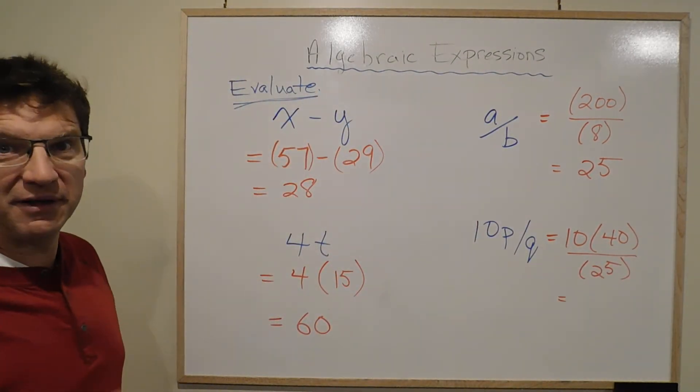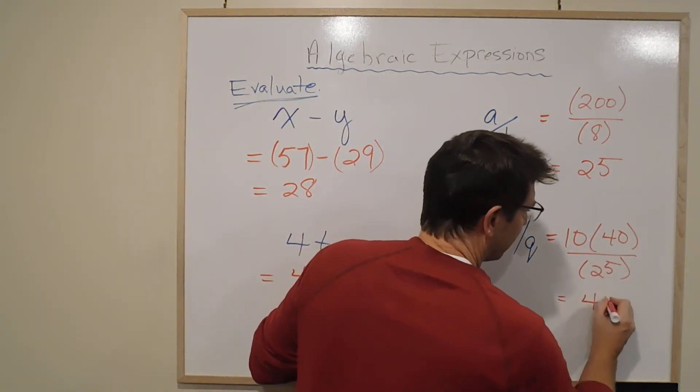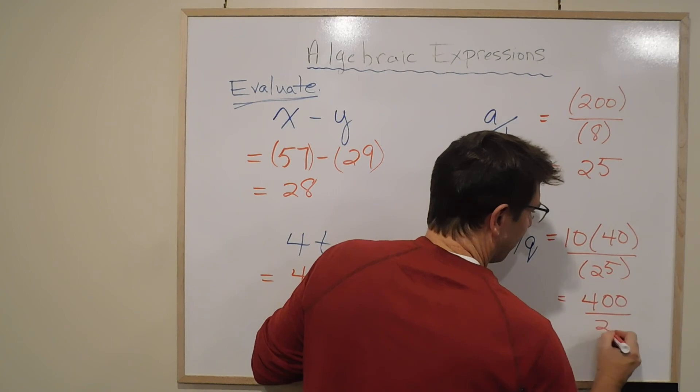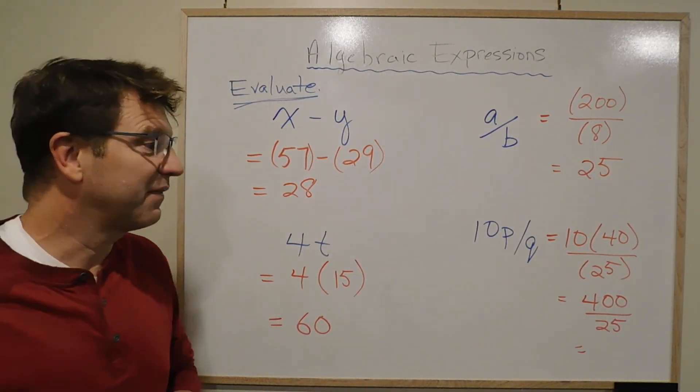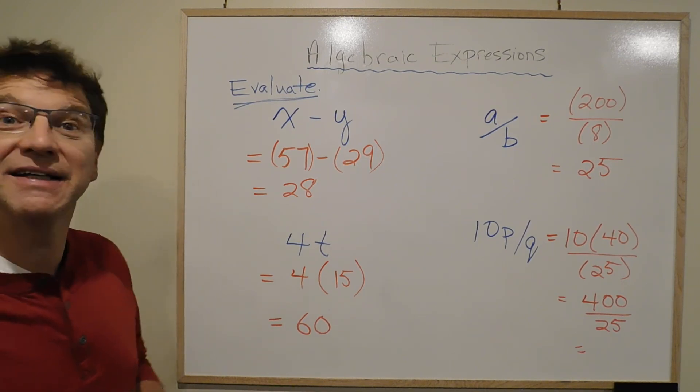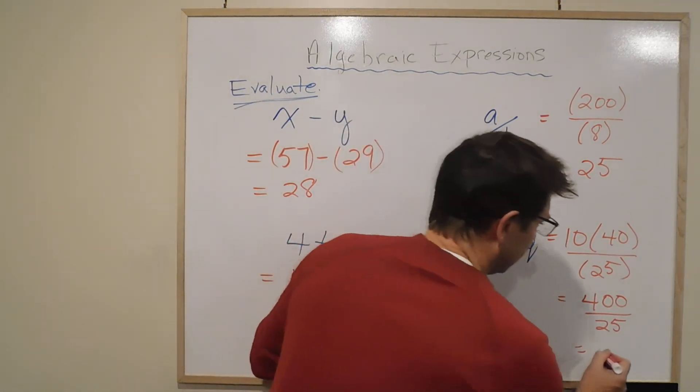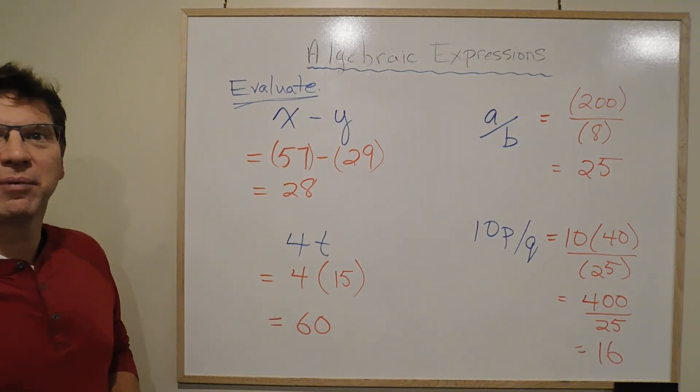Now, there's an intermediate step here, because we have to go 10 times 40 to get 400 over 25. And then you get 400, divide that by 25. 400 divided by 25 is 16. And that's how we got all four answers there that are in the PowerPoint slide.